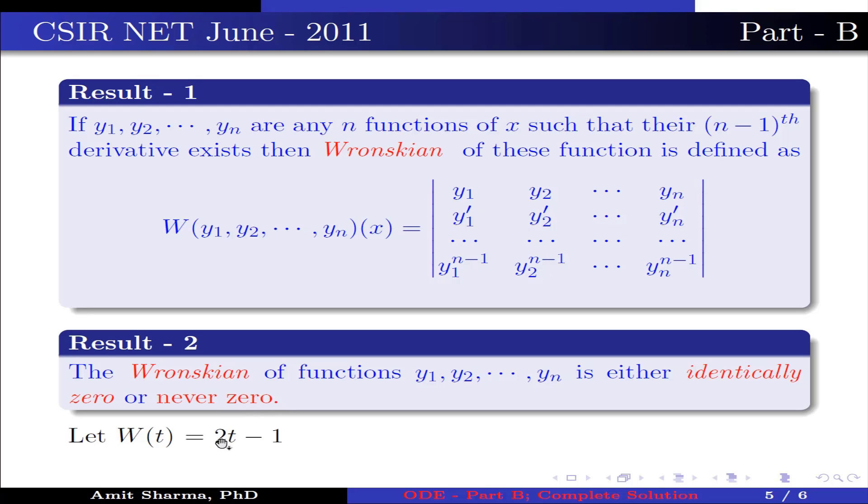Let W(t) is 2t-1, which is 0 only when t is 1/2 that belongs to closed interval [0,1], and we know that the Wronskian is either identical 0 or never 0. This implies option 1 is false.